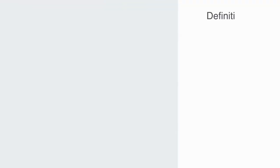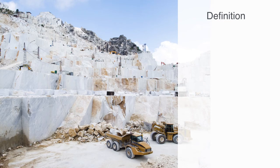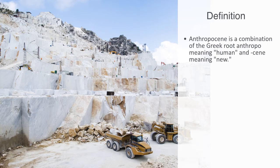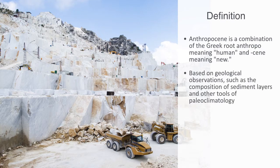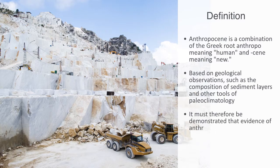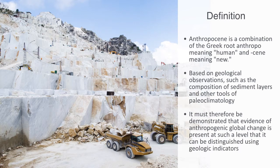The name Anthropocene is a combination of the Greek root 'anthropo' meaning human and 'cene' meaning new. As a scientific term it refers to the current geological epoch where human beings are identified as the primary factors of change within Earth's systems. Geological epochs are distinguished from one another based upon geological observations such as the composition of sediment layers and other tools of paleoclimatology. To justify the identification of a new Anthropocene epoch, evidence of anthropogenic global change must be present at a level distinguishable using geological indicators despite natural variations across the Holocene.